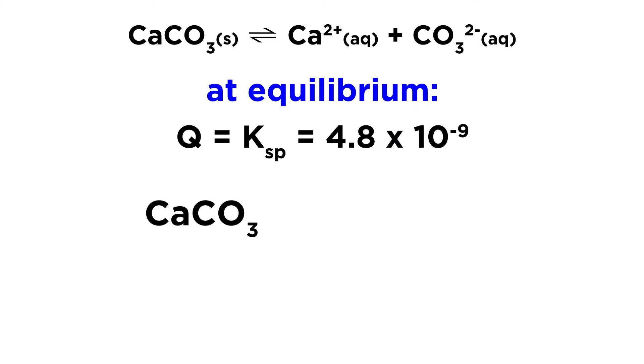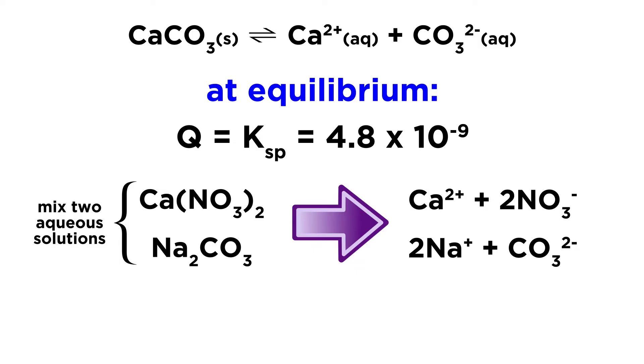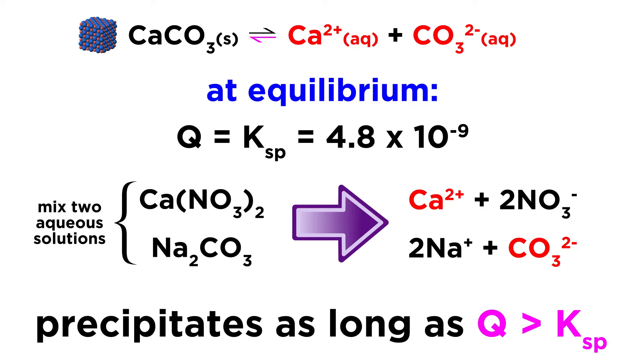Let's say that instead of dissolving calcium carbonate, we mix together aqueous solutions of calcium nitrate and sodium carbonate, both of which will completely dissolve to produce the respective ions. With calcium ions and carbonate ions in solution, but no solid calcium carbonate, this equilibrium will shift left, causing some precipitation of calcium carbonate to occur as long as Q is greater than Ksp. So a comparison of Q and Ksp is the way to predict whether precipitation will occur in solution.